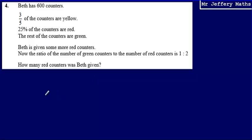So what I'm going to need to do first of all is just work out how many of each counter Beth has at the beginning before these red counters were added to the mix. So we're told that Beth has 600 counters and that three-fifths of the counters are yellow. So the first thing that we're going to do is work out three-fifths of 600.